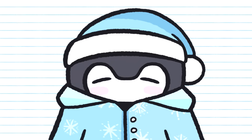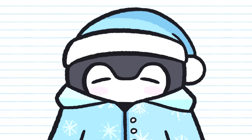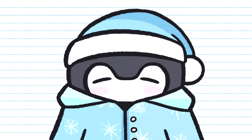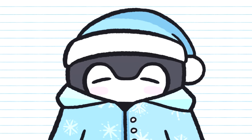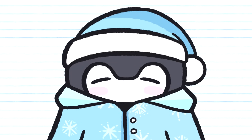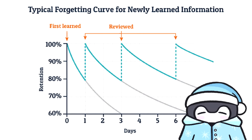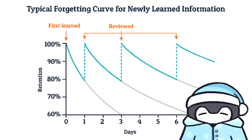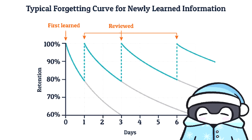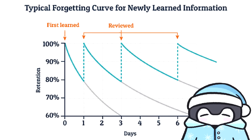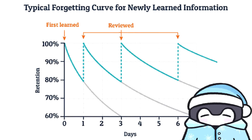Unlike normal flashcard programs, Anki is what's called an SRS — a Spaced Repetition System. This essentially means there's an algorithm that looks at how you grade your cards and determines how easy or difficult it thinks they are for you, setting an interval for which that card should show up next for maximum efficiency.